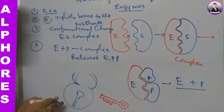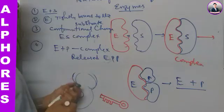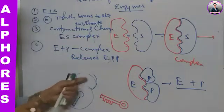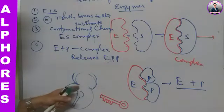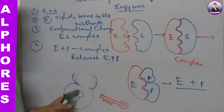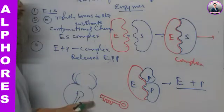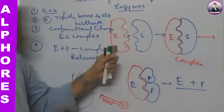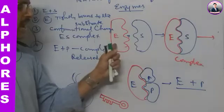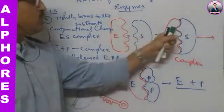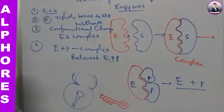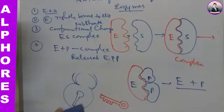So in four stages the process of enzyme action takes place. This is the simple mechanism — how the lock and key function, how the lock opens with a specified key. Similarly, a particular substrate molecule and a particular specific enzyme act as a catalyst to convert substrate molecules into products. This is one mechanism proposed by Emil Fischer. Another theory is also there.